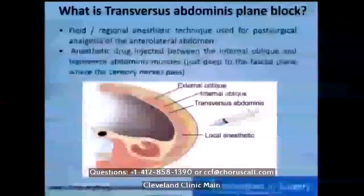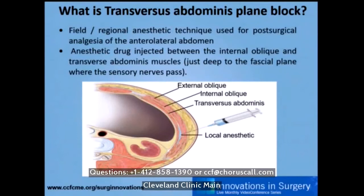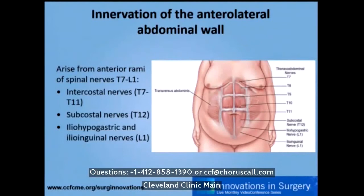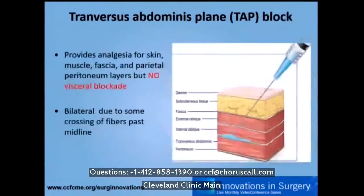What is transverse abdominis plane block? It's a field or regional anesthetic technique used for post-surgical analgesia of the anterior abdomen. The anesthetic drug is injected between the internal oblique and transverse abdominis muscle, just deep to the fascia plane where the sensory nerve runs. The innervation of the anterior abdominal wall arises from the anterior rami of the spinal nerves T7 to L1. TAP block provides analgesia for skin, muscle, fascia, and parietal peritoneum — but it does not have a visceral block.